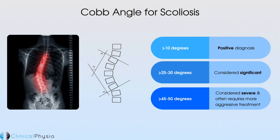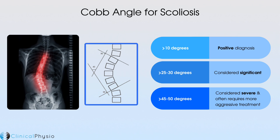A lot of the time, people get told they have a scoliosis just from a clinical examination. But how do we actually define the level and intensity of a scoliosis? We can use investigations like x-rays to measure the Cobb angle. The patient will have a PA x-ray of the spine, taken from behind, and then lines are drawn parallel to the upper border of the uppermost vertebral body involved in the curve and the lower border of the lowest vertebra involved in the curve. From these lines, the Cobb angle is measured to see the extent of the scoliosis. A Cobb angle of more than 10 degrees leads to a positive diagnosis of scoliosis.